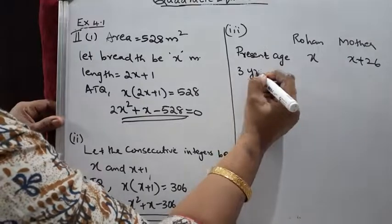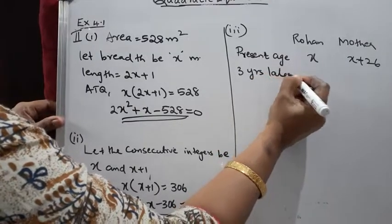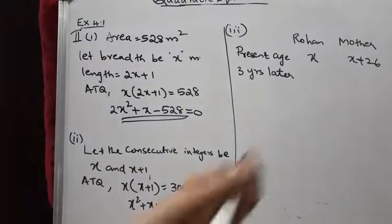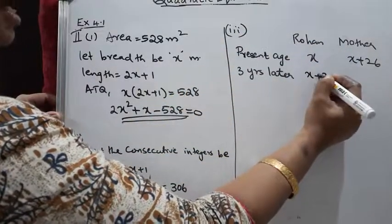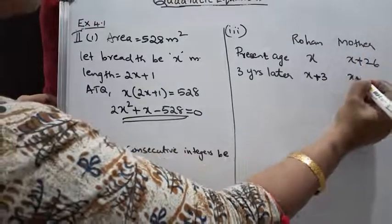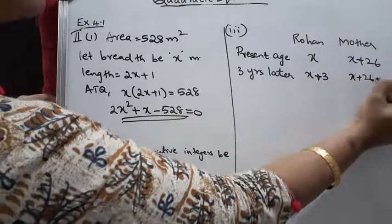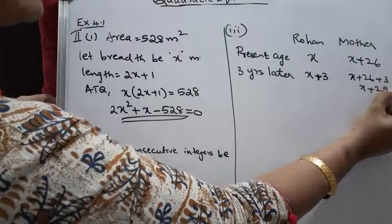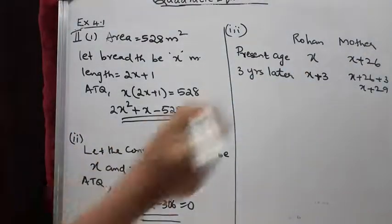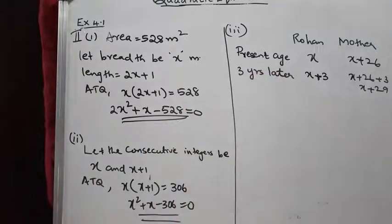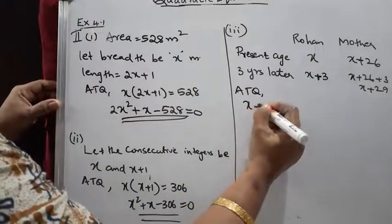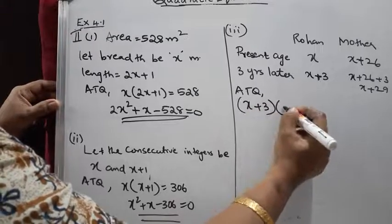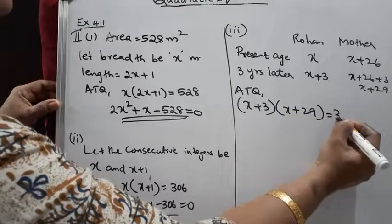After 3 years, Rohan's age will become x + 3 and his mother's age will become (x + 26) + 3, that means x + 29. The given condition is that the product of their ages is 360. So according to the question: (x + 3)(x + 29) = 360.